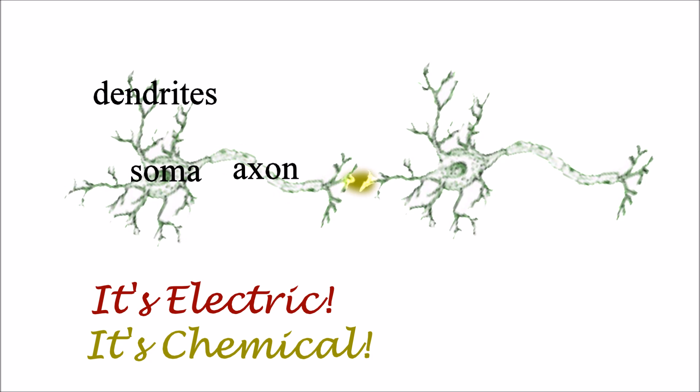Neurons transmit information directionally as an electrical signal from the dendrite to the soma to the axon, and then as a chemical signal from the axon of one cell to the dendrite of the next cell, basically a cellular game of telephone.